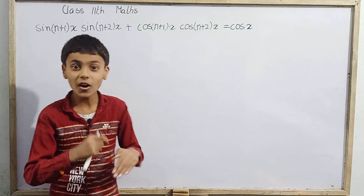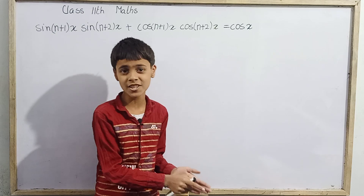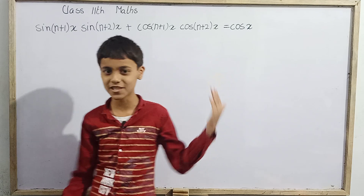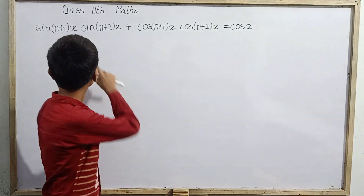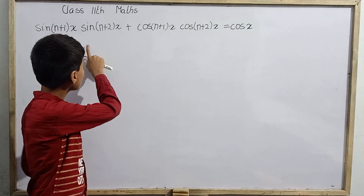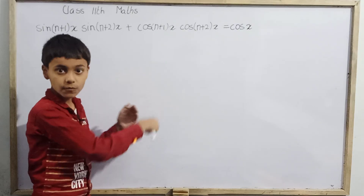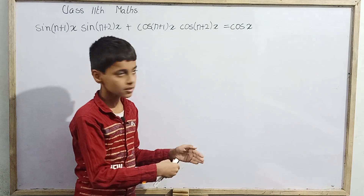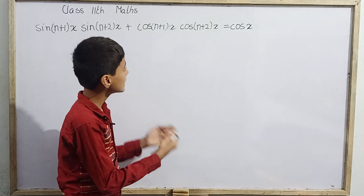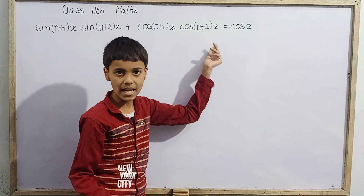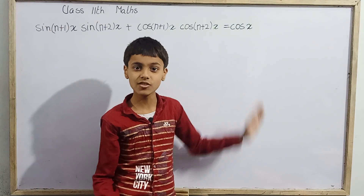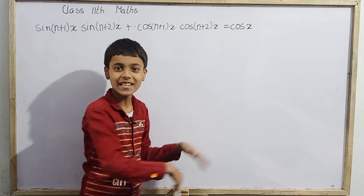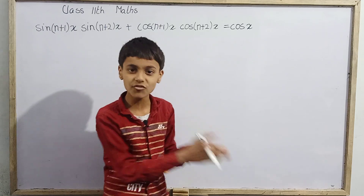This is today's question: we have to prove the equation that sine of (n+1)x times sine of (n+2)x, plus cos of (n+1)x multiplied by cos of (n+2)x, is equal to cos x. We have to prove this — the answer is already given, so we need to show how that answer comes about.